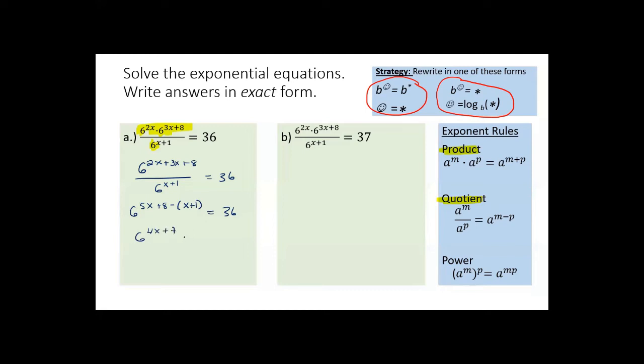So I have 6 to the 4x plus 7. I'll rewrite 36 as 6 squared. And then I can take my exponents using this strategy of the one-to-one property and rewrite it as 4x plus 7 is equal to 2. From here, solving for x, I obtain 4x equals negative 5, and finally x is equal to negative 5 fourths.